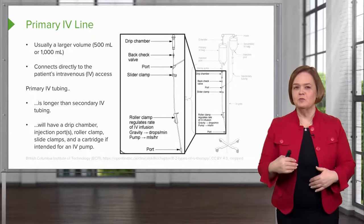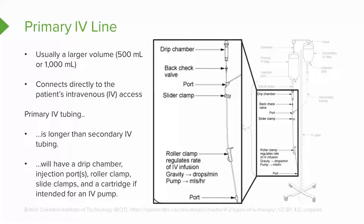Let's recap. Usually we have a larger volume bag on the primary IV line — 500 milliliters or 1,000 milliliters. That connects to primary tubing, which connects directly to the patient. Primary tubing is much longer than secondary tubing, and there will be a drip chamber, injection ports for medication, a roller clamp to control how fast the drops drip, a slide clamp to completely shut it off or open, and a cartridge on the tubing if it's intended to be used in an IV pump.